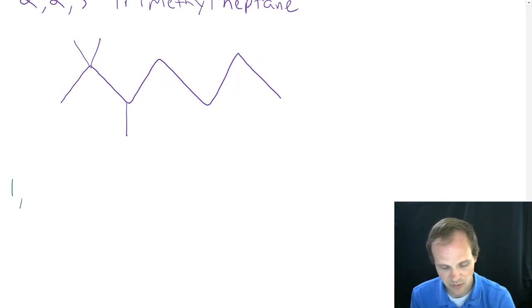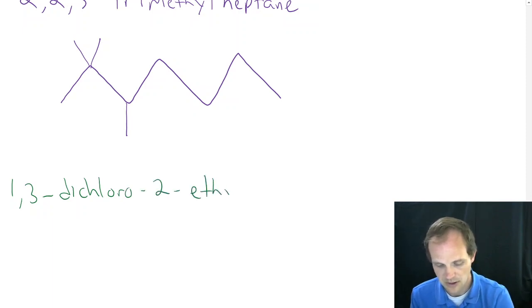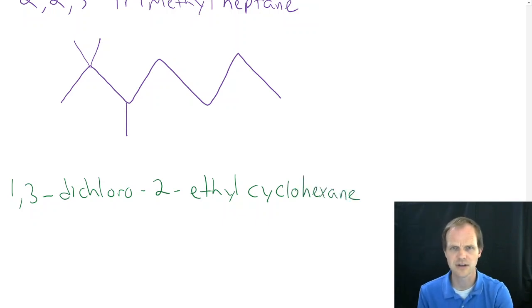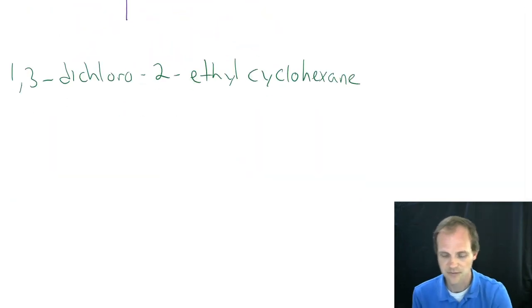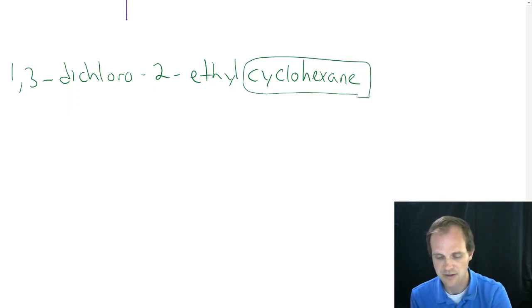Our last example is going to be 1,3-dichloro-2-ethylcyclohexane. Again, very fancy looking, very huge looking name. Like, oh, how can you possibly understand this? And by the way, after this section, when you read things like shampoo bottles, they'll make a little more sense. Draw our backbone first. Remember in this class, the ring is the backbone. So our cyclohexane is our backbone. Hex is 6.